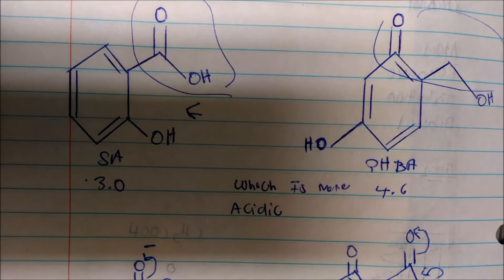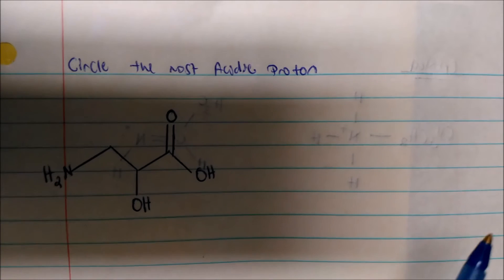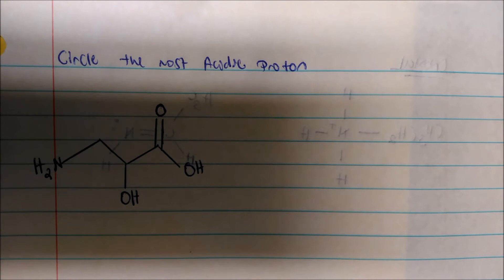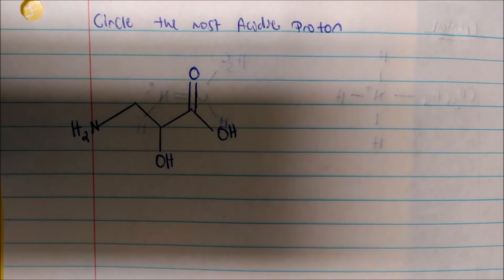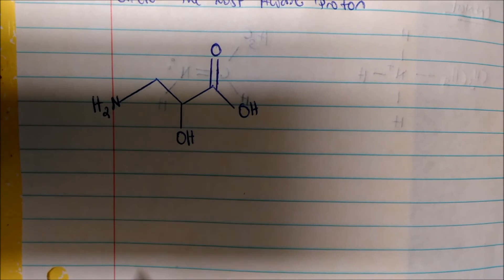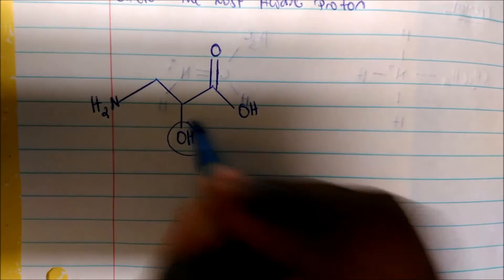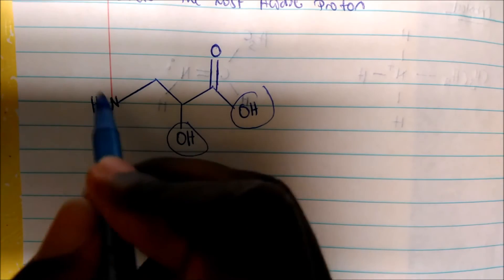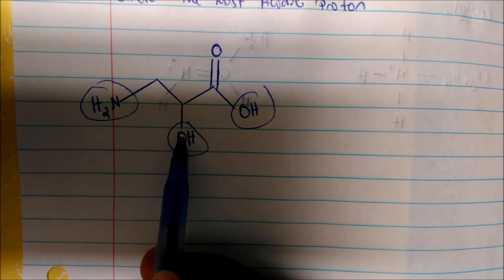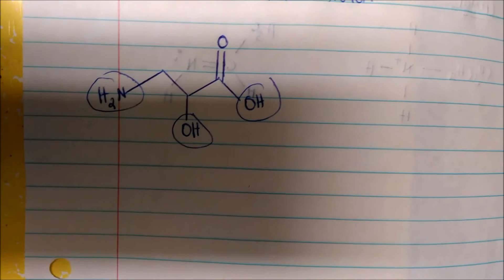Now let's look at circling the most acidic proton. It's the same idea — induction, resonance, the more electronegative the atom bearing the negative charge, the more stable the conjugate base. The first thing you want to do in identifying the most acidic proton is to draw the conjugate base. The most acidic proton is always an H-plus. So I'm going to draw the conjugate base for each candidate proton.